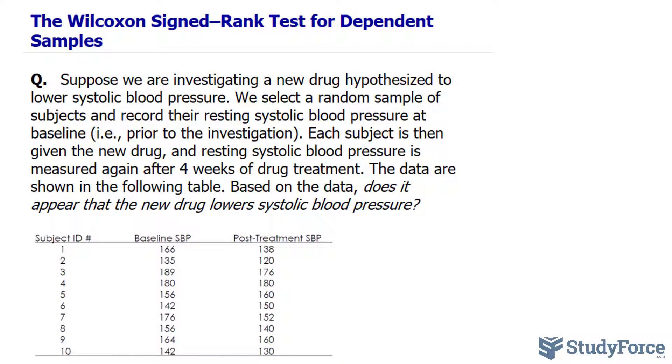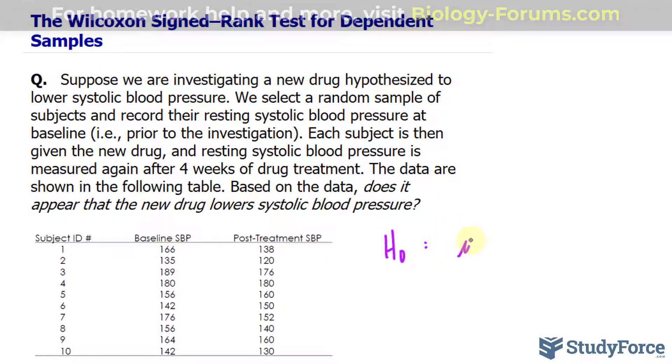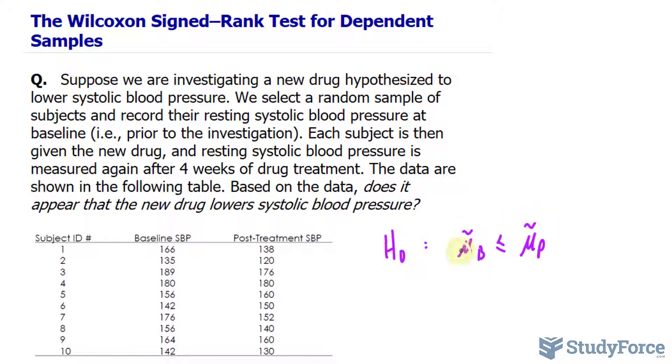You want to start off by writing out the null and alternative hypothesis, and these are always based on the median of the population, not the mean. The null hypothesis will be that the median of the baseline is less than or equal to that of the post-treatment. And don't forget that we represent median with this tilde on top of mu. The alternative will be the opposite, where the median of the baseline is greater than that of the post-treatment.